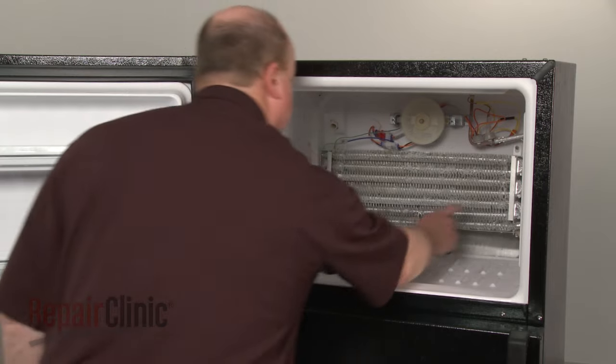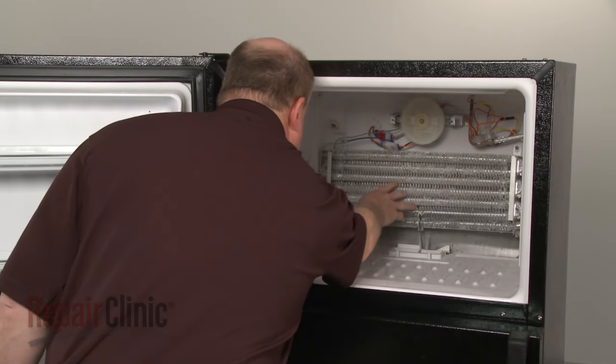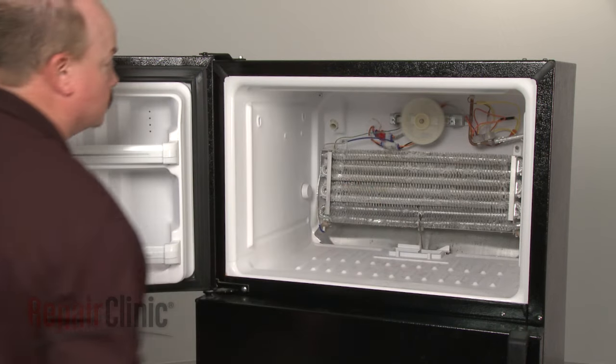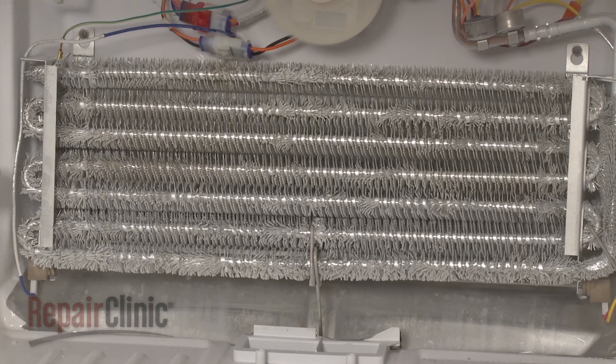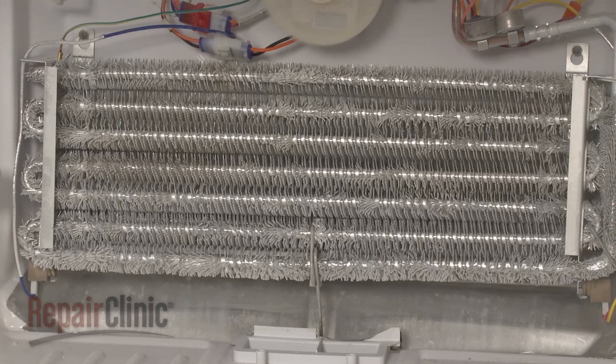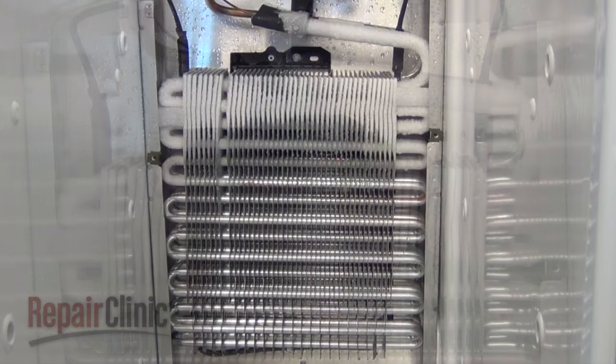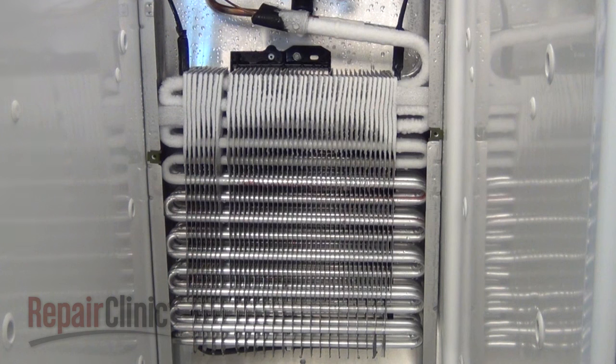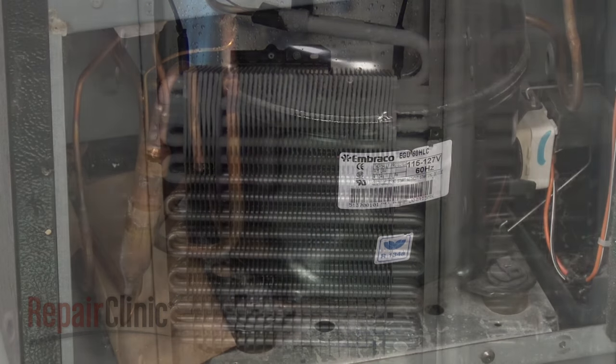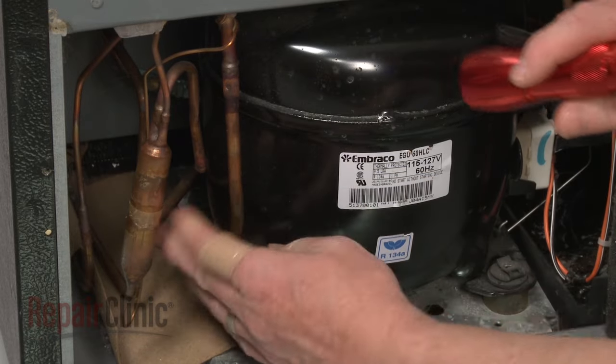You can determine if there is a cooling problem with this system by observing the evaporator coils while the refrigerator is running. If the system is operating properly, there should be a consistent frost pattern on all of the evaporator coils. If only one or two rows contain frost and the rest do not, it's likely that the sealed system has developed a restriction or a leak. Be aware that any repairs to the system must be performed by a licensed technician.